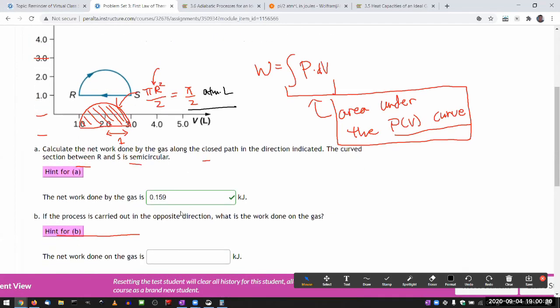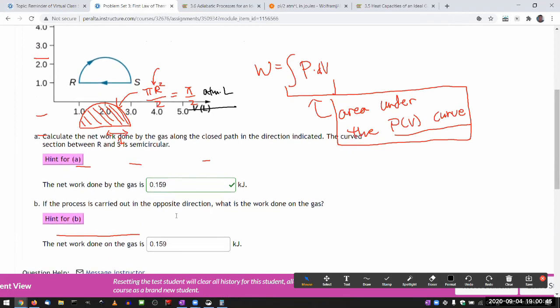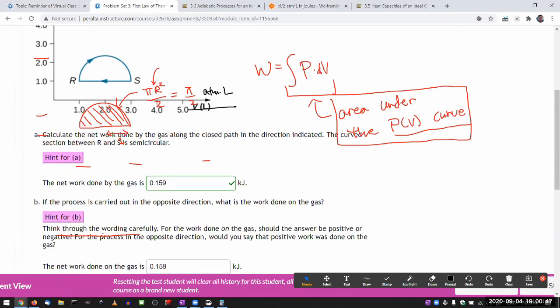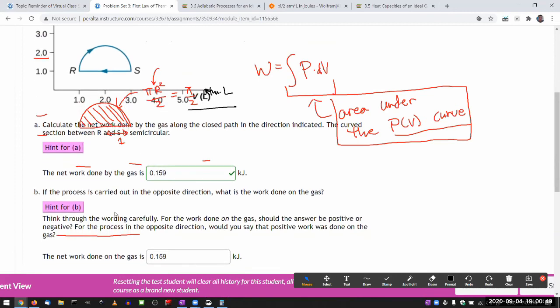Okay, so in the opposite direction. So here, what you have to read carefully, is by the gas and on the gas. And when they say on the gas, it's still the same number. Now, if they asked for by the gas, then I would put a minus sign. I hope that's what the hint explains. Yeah, think through the wording carefully.